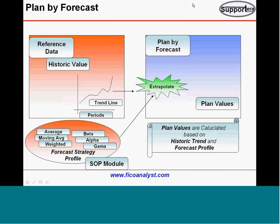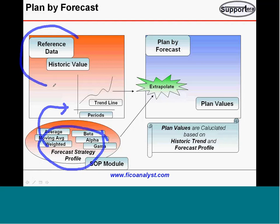SAP applies these models — called forecast strategies — and looks at historical values, meaning what happened over the last one year or five years. Using this forecast strategy and historical values, the system calculates a kind of trend analysis.